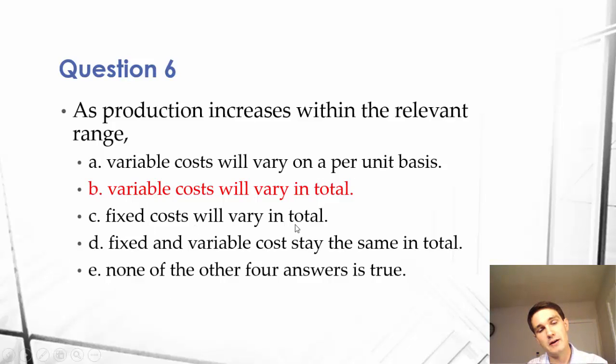C, fixed costs will vary in total. They don't. Fixed costs are constant in total. They vary per unit, so that's wrong. D, fixed and variable costs stay the same in total. This is wrong. Variable costs increase proportionally in total. Fixed costs do stay the same, but the combination total costs obviously grow, which was our f of x previously.